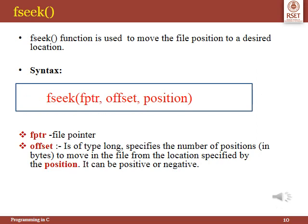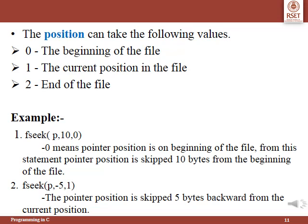The fseek function is used to move the file position to a desired location. It contains three parameters: fptr, offset, and position. fptr is a file pointer. Offset, which is of type long, specifies the number of bytes to move the file pointer from the location specified by the position parameter. The value of position can be negative or positive. The parameter position can take the following values: 0 indicates the beginning of the file, 1 indicates the current position, and 2 indicates the end of the file.